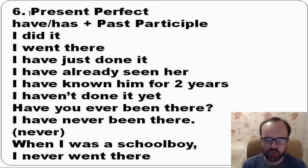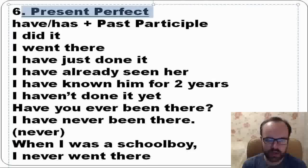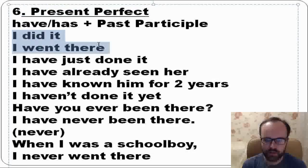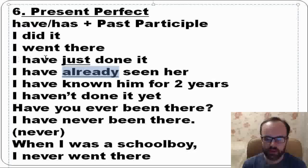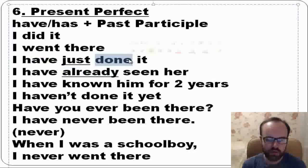What about present perfect? We form it with have/has plus past participle. If we talk about the past, we usually use past simple — for example, I did it, I went there. But there are time markers that tell us to use present perfect. Please remember them: I have just done it — 'have' plus past participle is the third form. If you have 'just,' you need to use present perfect. Already — I have already seen her.